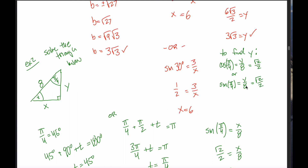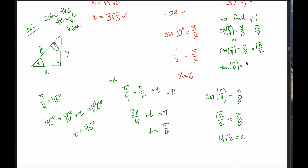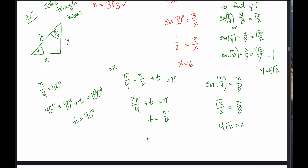Two more ways to get there. The tangent of pi over 4, where x is opposite and y is adjacent relative to this angle, gives tangent of pi over 4 equals x over y, which is 4 root 2 over y. The tangent of pi over 4 from the unit circle equals 1, so 4 root 2 over y equals 1, giving y equals 4 root 2. And using the Pythagorean theorem: 4 root 2 squared plus y squared equals 8 squared, which also yields y equals 4 times the square root of 2.